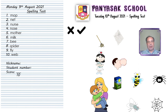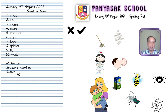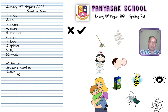Number nine was FLY, spelled F-L-Y. And the last one was WEB, spelled W-E-B. WEB. Please make sure you spelled all the words correctly and then write check or X. Write your score. Thank you.